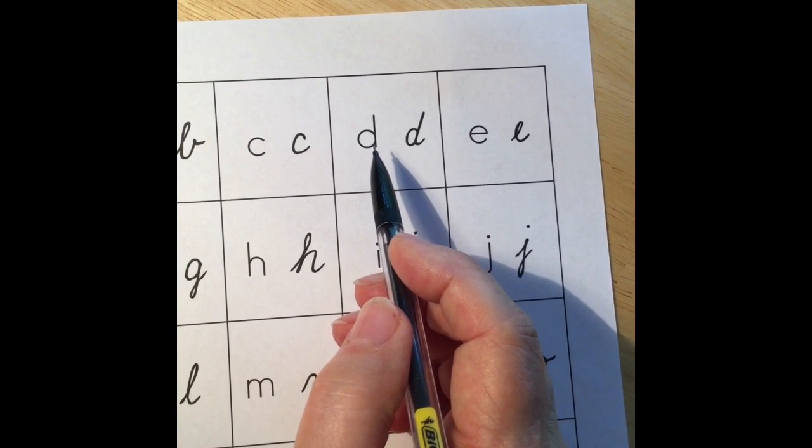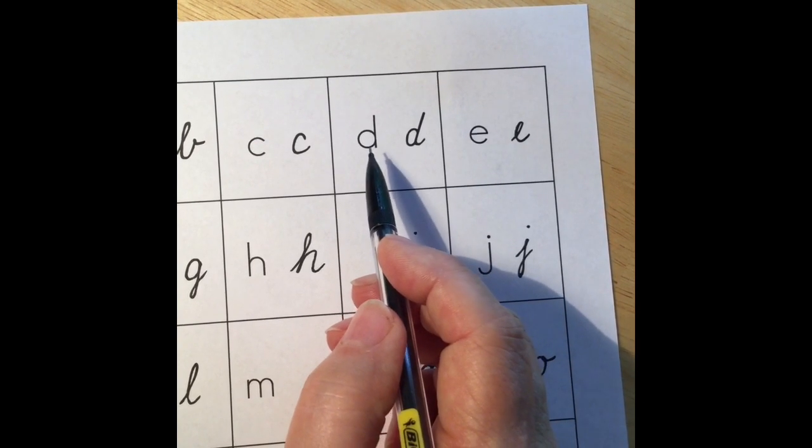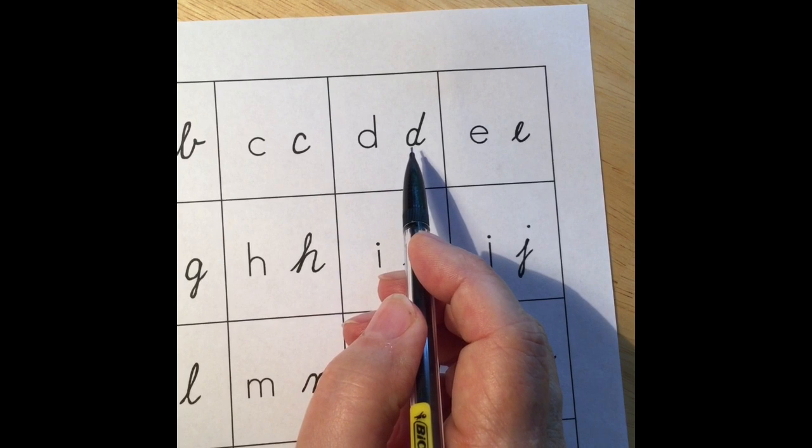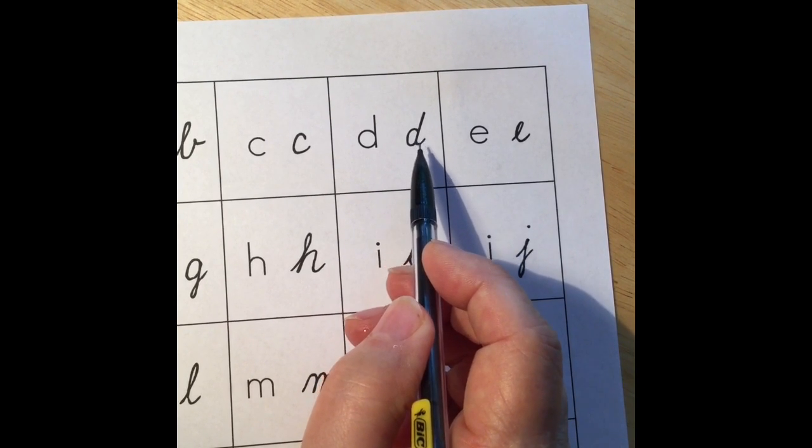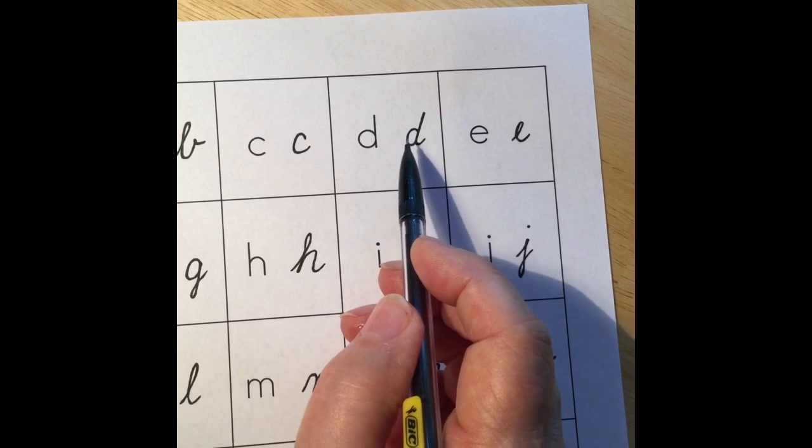Our second down curve letter is D, and we can see that a printed D and a cursive D are very much alike. The cursive D just has an extra connector stroke and it is slanted.